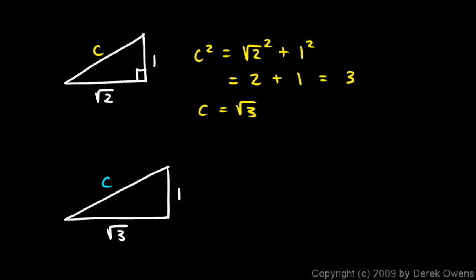Pythagorean theorem again. C squared has to equal this squared plus that squared. So it's going to be the square root of 3 squared plus 1 squared. And the square root of 3 squared is just 3, and 1 squared is obviously 1, and 3 plus 1 is 4. So c squared is 4. So c is the square root of 4. And we know the square root of 4, that's 2.